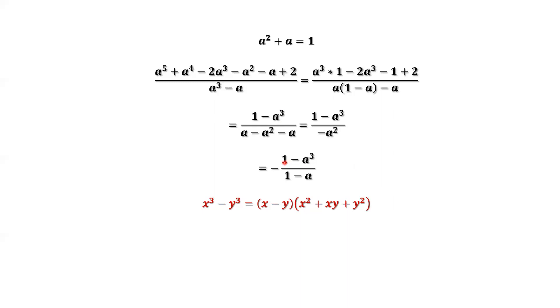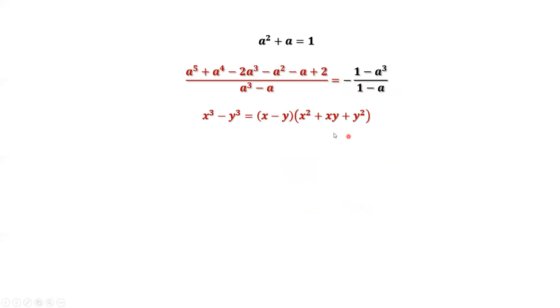In our situation, x equals 1, so we have 1 to the power 3. This gives us 1 minus a times 1 plus a plus a squared, then divide by 1 minus a. We cancel 1 minus a from both numerator and denominator.